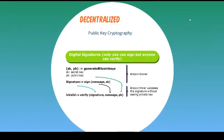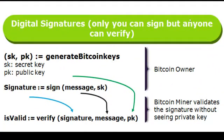Now on to decentralization. In a centralized banking world, your password is stored with the bank so they can validate it when you log in to send money. However, in a decentralized world, someone has to validate that you own the password without seeing it. To achieve this, Bitcoin uses something called asymmetric encryption. This type of encryption uses one key for encryption and another for decryption. When you own a Bitcoin, all you own is a secret key that corresponds to a public key. You can sign a message using your secret key, but anyone can validate that you signed it as long as they have the message, the signature, and the public key — the secret key remains with you.